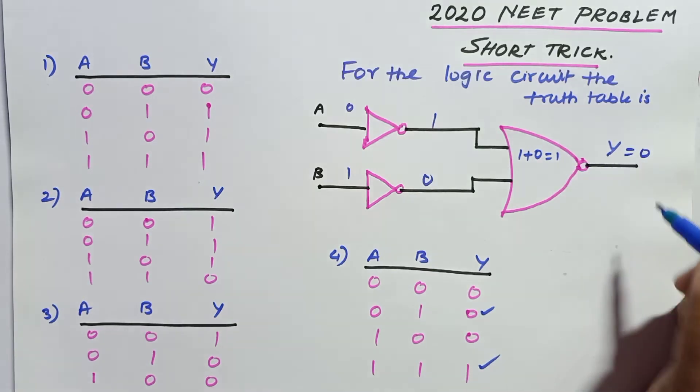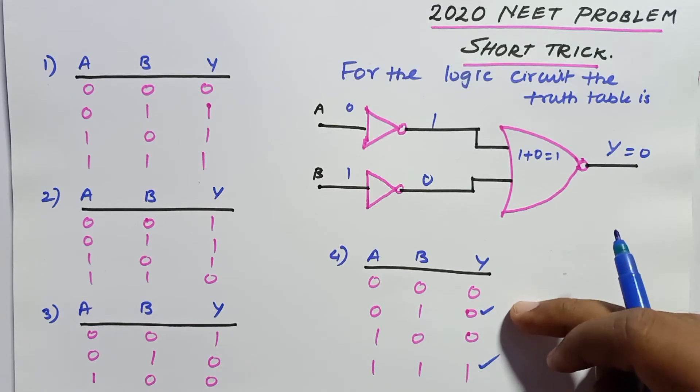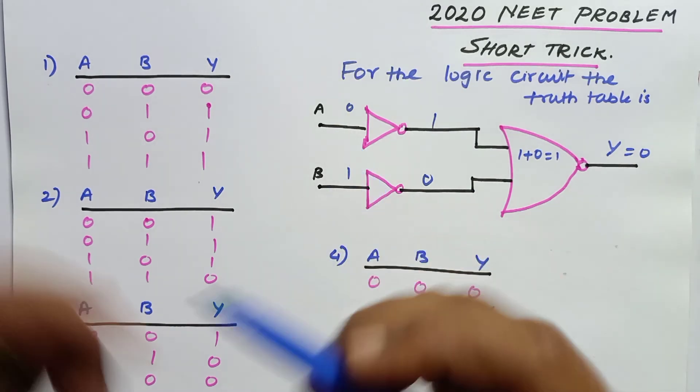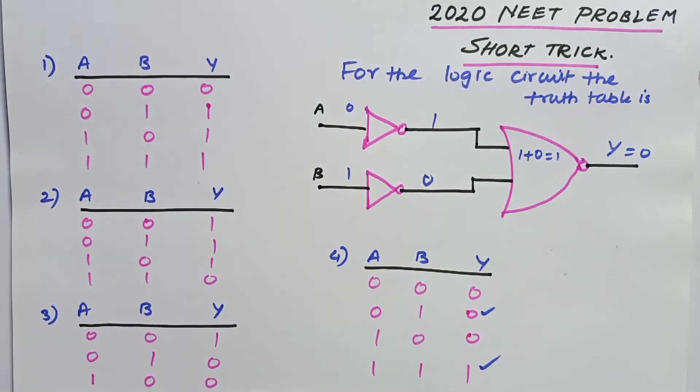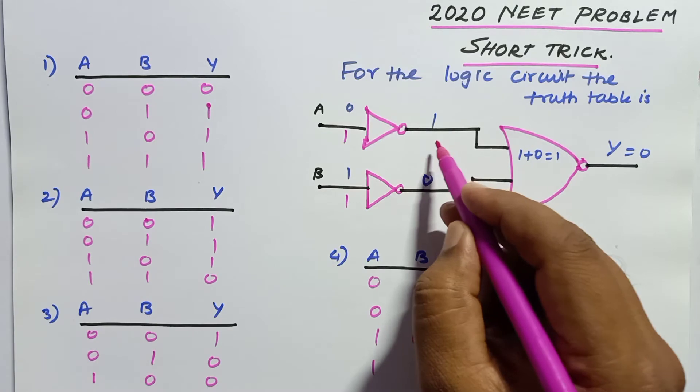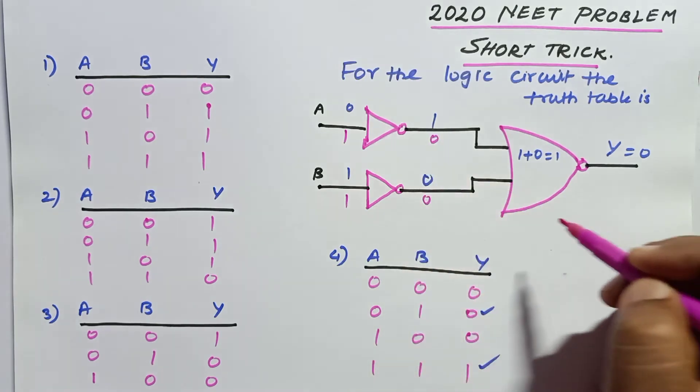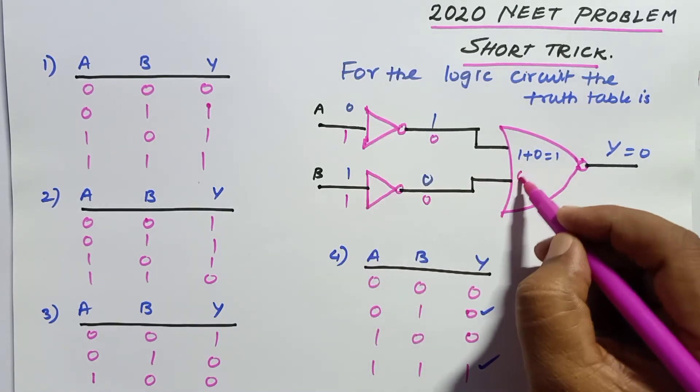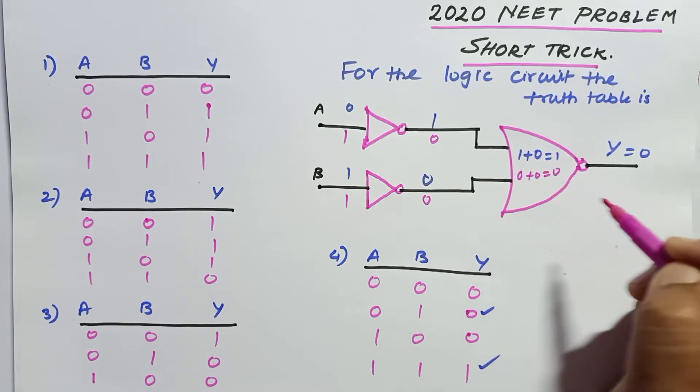Next condition: you need to take 1 and 1. For 1 and 1, you get 0 and 0 because these are NOT gates. So 0 plus 0 is going to be 0, and the output here is going to be 1. That's enough.